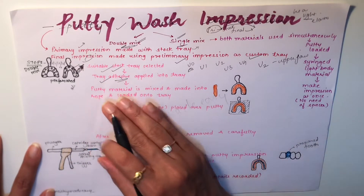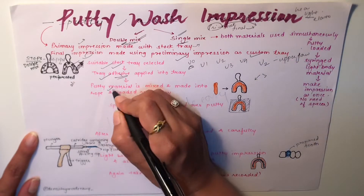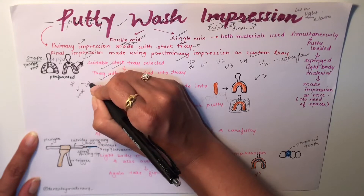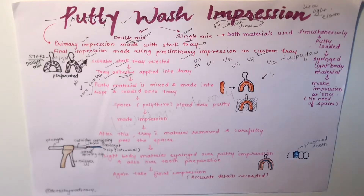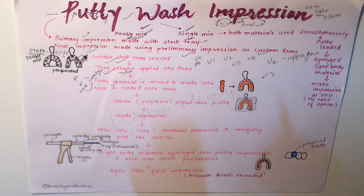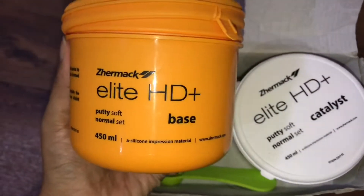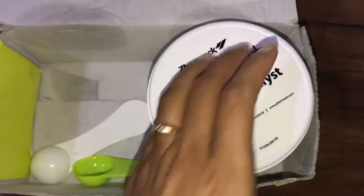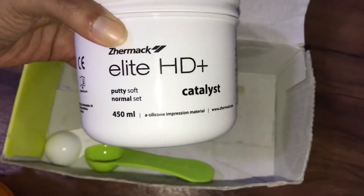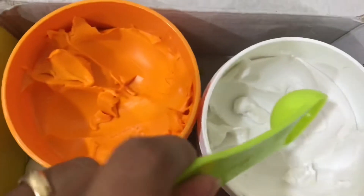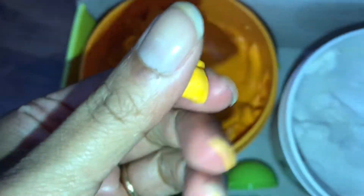Next, mix the putty material. It is available as a base and a catalyst. Take equal amounts of both and mix them together, forming a rope shape, then load it onto the selected tray. The catalyst is white and the base is a mango-yellow color. When mixed properly, the material becomes a light yellowish color, indicating it is well and uniformly mixed.